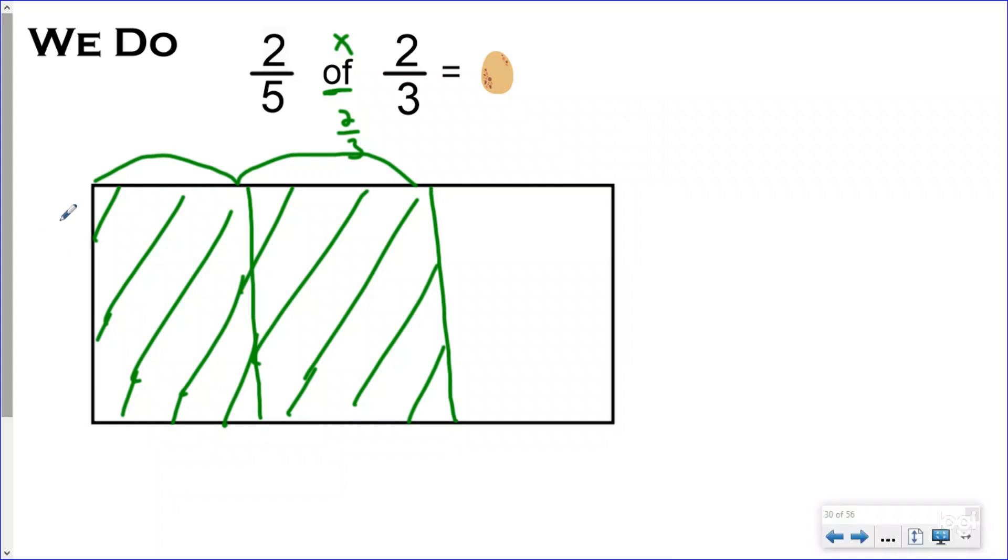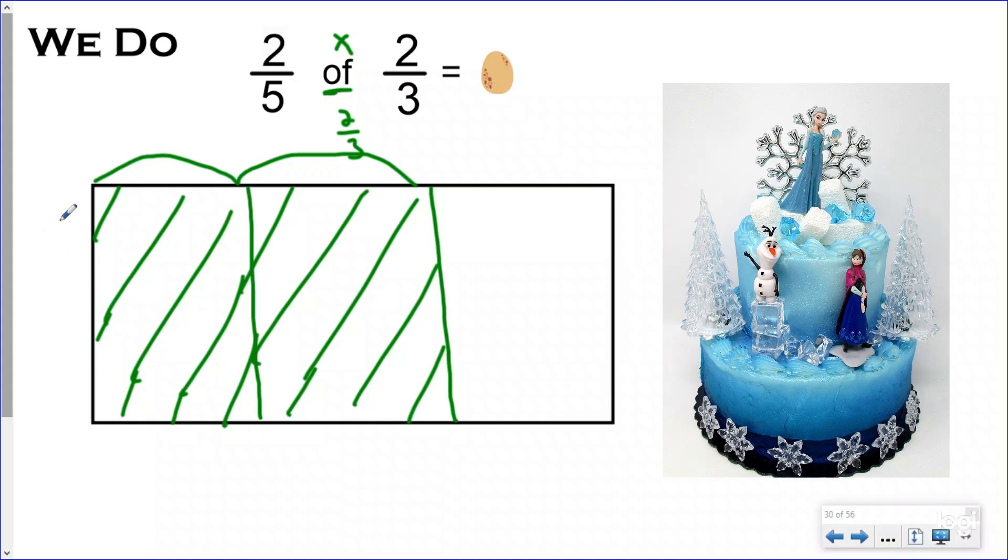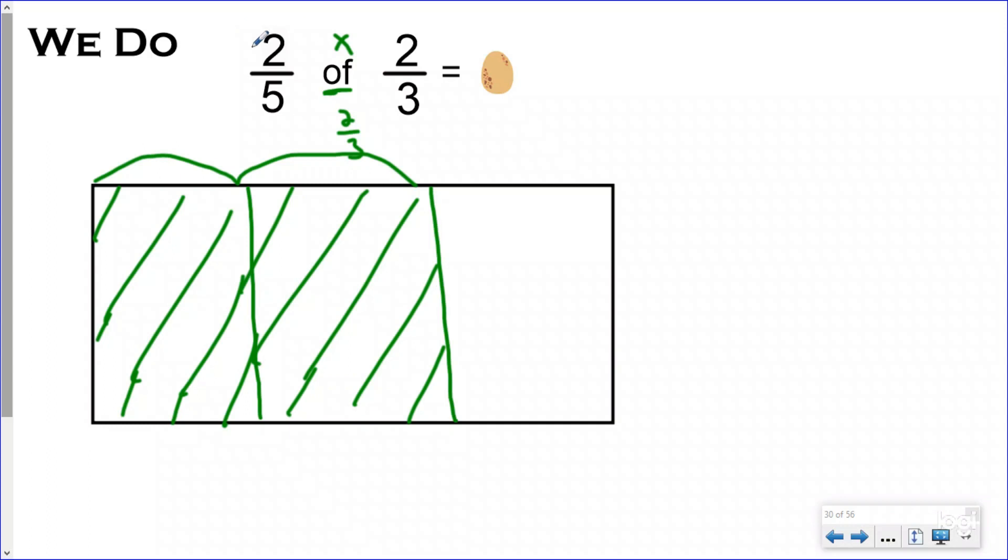So now I'm going to split my area model into three equal pieces, and I know that I was looking for two-thirds of those, so I will shade in two-thirds again using my cross-shading strategy, not just shading it in like I'm coloring a frozen coloring book and trying to color in Elsa's hair blonde. So I want to know, let's say Elsa ate two-thirds of her birthday cake, and then Anna stole two-fifths of what she had.